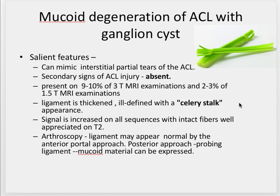So the features we have seen are: thickened anterior cruciate ligament, increased T1 signal intensity, and intact fibers in all sequences, with normal PCL and menisci and no bone contusions. All these features are suggestive of mucoid degeneration of the ACL, and there was a cystic structure associated with the mucoid degeneration of the ACL, which is suggestive of a ganglion cyst.